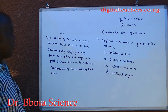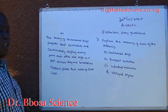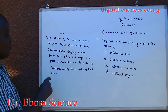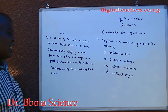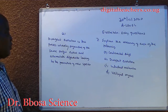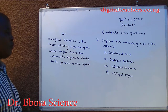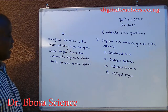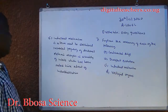A. The theory of continental drift proposes that continents are continuously drifting away from each other like rafts in a pool, because they are located on tectonic plates that make up the Earth's crust. B. Divergent evolution is the process whereby organisms of the same origins evolve and accumulate differences, leading to the formation of new species.